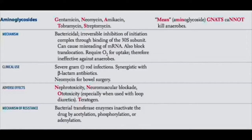Aminoglycosides include gentamicin, neomycin, amikacin, tobramycin, and streptomycin — basically all the '-mycins' with the exception of erythromycin and clindamycin. They only work on aerobes because they require oxygen for uptake of the drug into the cell. The mechanism is misreading of the mRNA. They are narrow spectrum and work on gram negatives. Adverse reactions include nephrotoxicity — specifically acute tubular necrosis — ototoxicity, and teratogenicity.